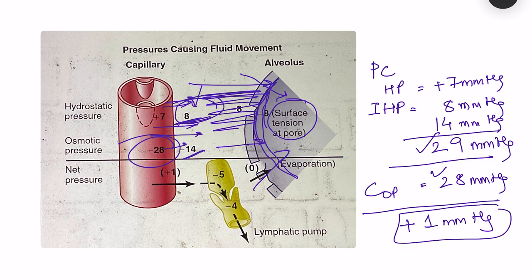This plus 1 millimeter mercury is the force that drives fluid from the capillary towards the interstitial lymphatics. However, normally the interstitial tissue and the alveoli are kept dry because of the presence of lymphatics. The lymphatics, by their expansion, cause movement of fluid from the interstitial tissue into the lymphatics, which carry away the excess fluid that has leaked out from the vessels. So that is the normal physiology.